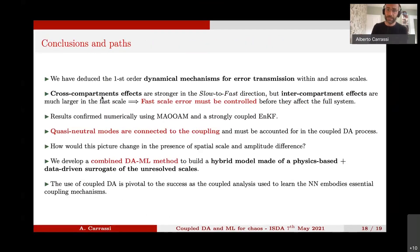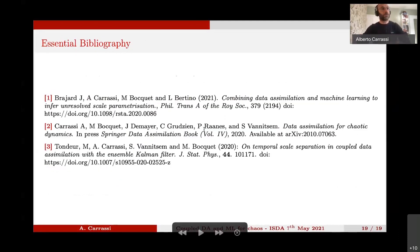Conclusion, we have studied the dynamical mechanism for the error transmission within and across scale, which has shown that the cross compartment effect are stronger in the slow to fast direction whereas the intra-compartment effect are much larger in the fast scale, which is the reason we believe to control the fast scale in order to be effective on the full system. These results have been confirmed using the coupled system. At the same time, we have shown that the quasi-neutral modes are connected to the coupling, must be accounted for in the coupled process. And then finally, we developed a combined data assimilation machine learning method to build a hybrid model made of physical-based plus data-driven surrogate of the unresolved scale. And in both cases, the use of coupled data has been pivotal. Thank you. These are the papers that I have used in this work. Thank you very much.